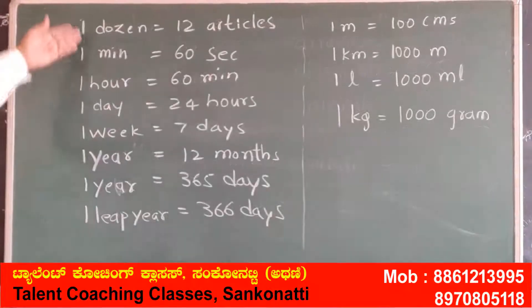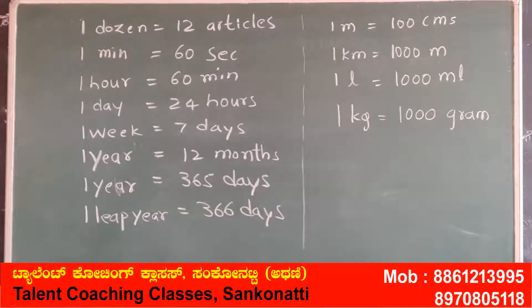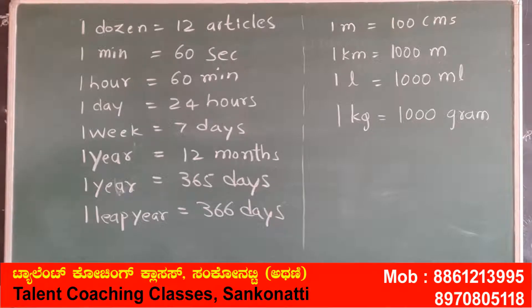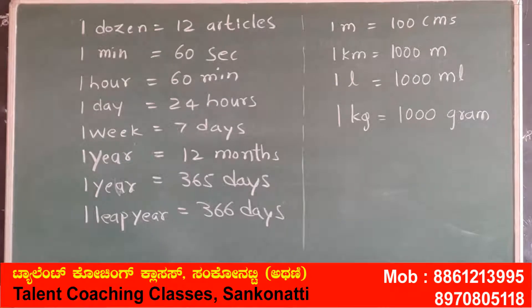Now memorize this data: 1 dozen equals 12 articles. 1 minute is 60 seconds. 1 hour is 60 minutes. 1 day is 24 hours. 1 week is 7 days. 1 year is 12 months or 365 days. 1 leap year is 366 days, because in a leap year the month of February contains 29 days instead of 28. 1 meter equals 100 centimeters. 1 kilometer equals 1000 meters. 1 liter equals 1000 milliliters. 1 kg equals 1000 grams.